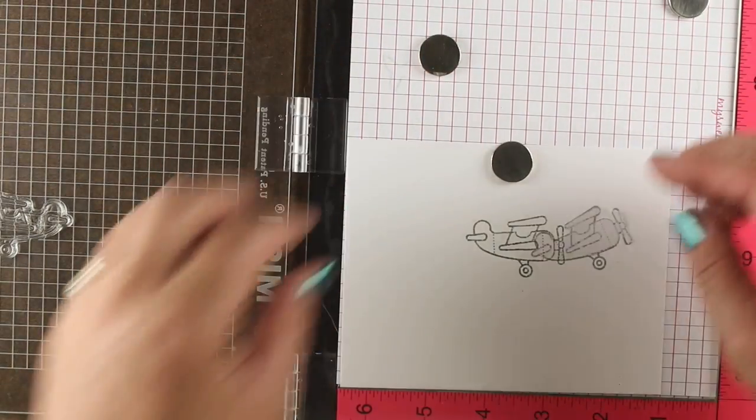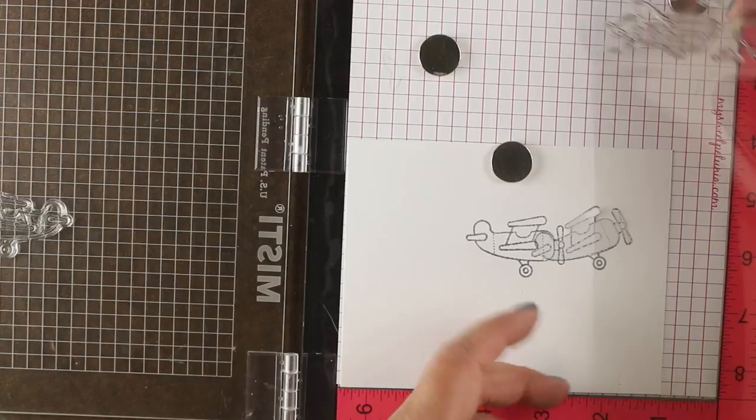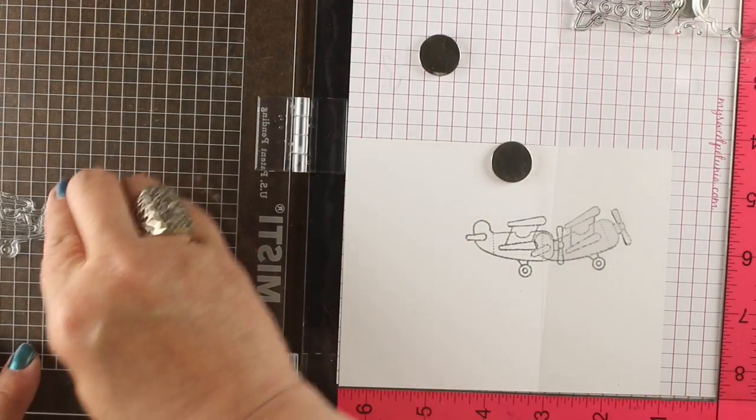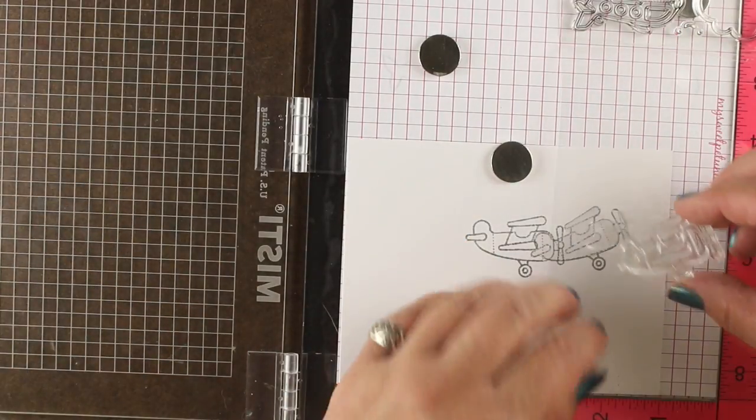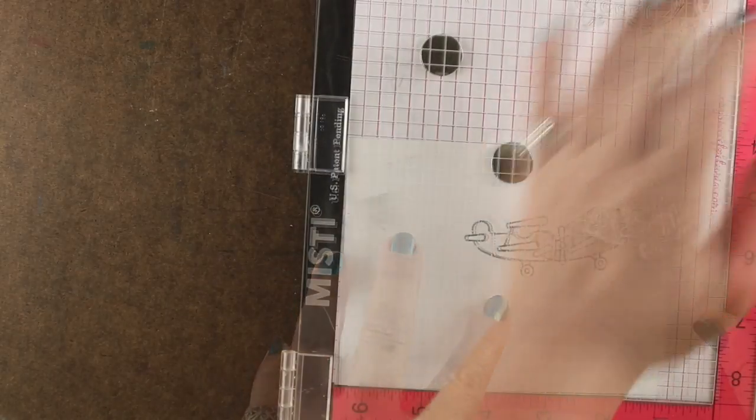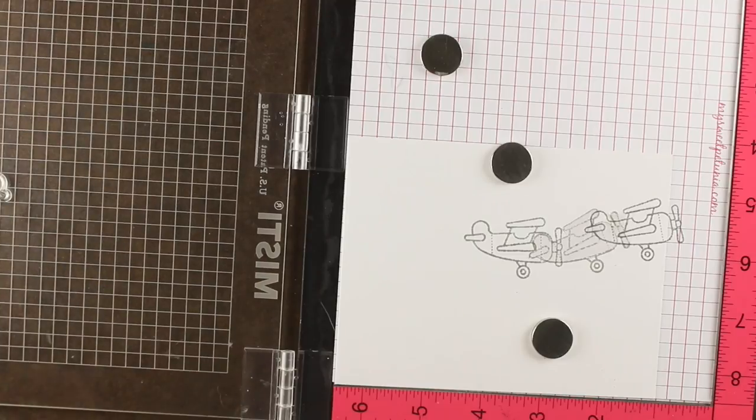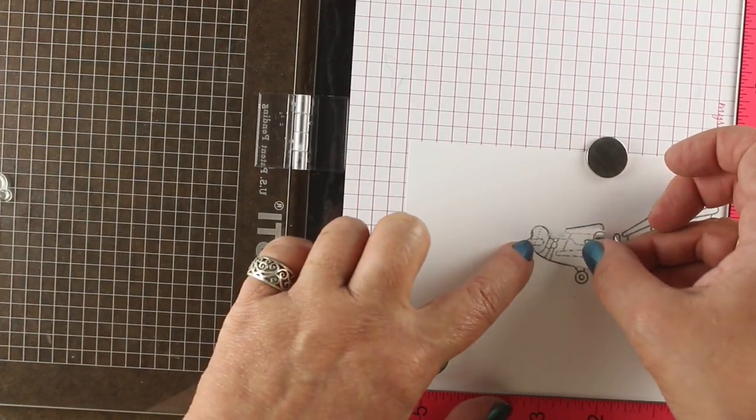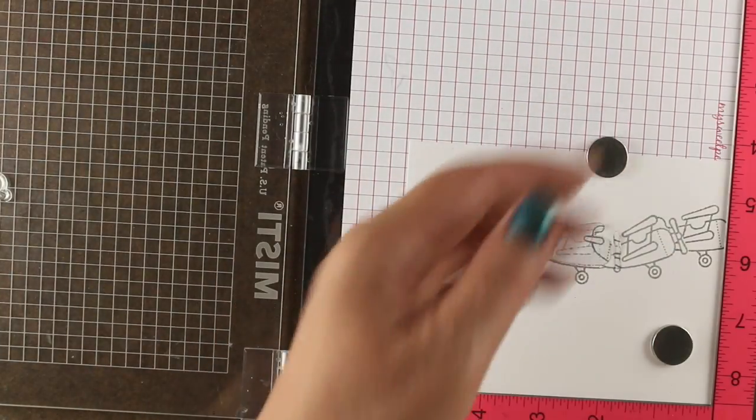I'm going to move it over while that mask is still on that one plane so I can make the one at the end. The reason that I'm making this one, that first one that I stamped, the central one, it's the only one that's going to have both the front and the back. The whole plane is going to be forward.